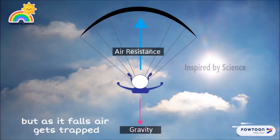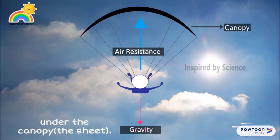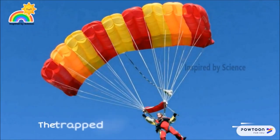But as it falls, air gets trapped under the canopy. The trapped air pushes up against the canopy, making the parachute fall slowly.